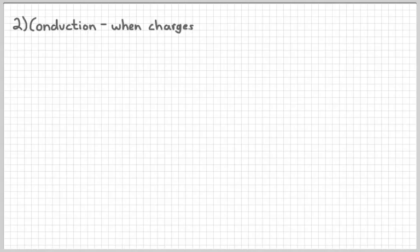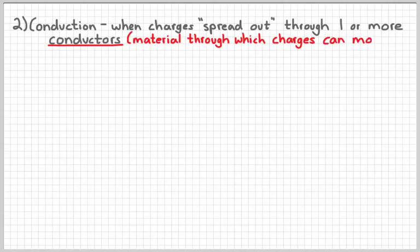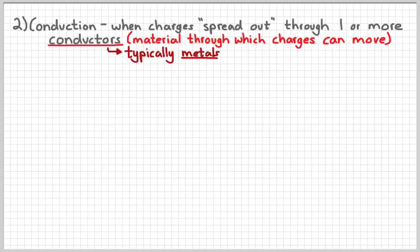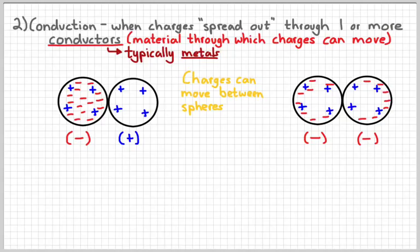The second way to transfer charge is via conduction. Conduction simply refers to the process of charges spreading out through a conductor. The definition of a conductor is a material that will allow charges to move through it. Typically, when we think of conductors, we think of metals. Metals are very good conductors. Silver is the best conductor that's common to us, with copper being a close second. That's why they make wires out of copper. So here's a picture of a negatively charged conductor. If we touch it to a positively charged conductor, since they're conductors, that means charges can move back and forth between them. The charges are going to spread out so that they are kind of equally spaced. Basically, all those extra negative charges, because negative charges will repel each other, are going to spread out so they'll occupy both spheres, making both spheres negatively charged.